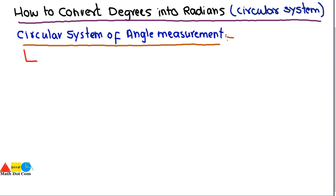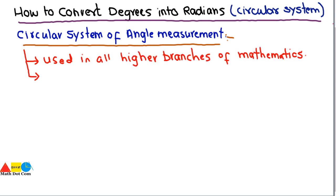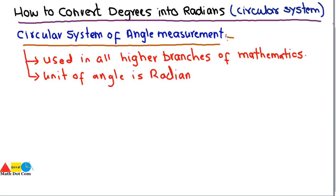The circular system is a system just like the sexagesimal system and the decimal system for measuring angles. It is used in all higher branches of mathematics. In this system, the unit of angle is radians — just as the unit is degrees, minutes, and seconds in the sexagesimal system, and degrees in the decimal degree system.